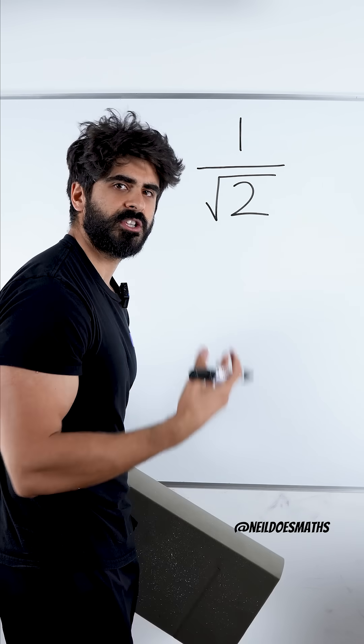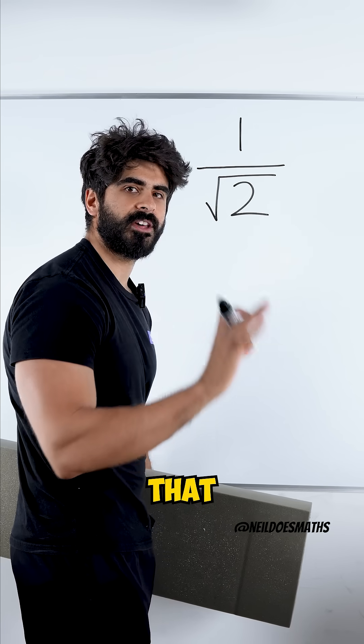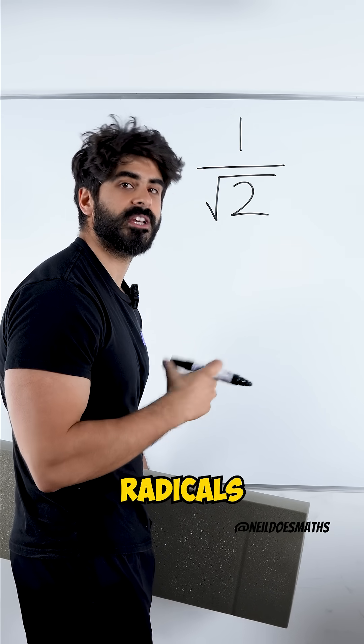Two is not a square number, so we cannot root it. And to rationalize means to rewrite this fraction so that there are no surds or radicals in the denominator.